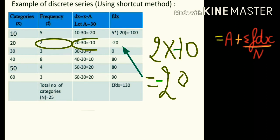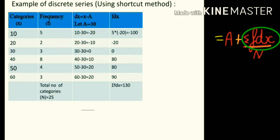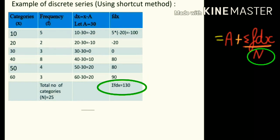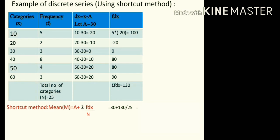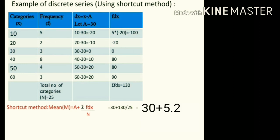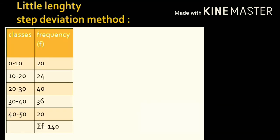We need σfdx — we sum up what we got in fdx, and after summing we get 130. N is the sum of all frequencies, which is 25. Now putting all values into the formula: 30 plus 130 upon 25. 130 upon 25 equals 5.2, so 30 plus 5.2 is equal to 35.2.